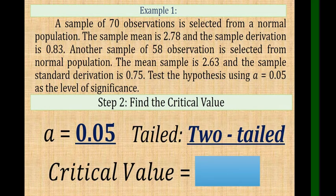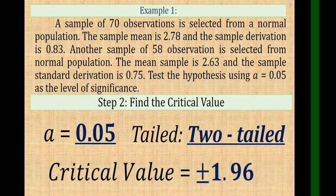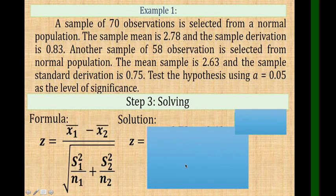Looking back to the critical region, if we put two-tailed and 0.05 and get their intersection in the critical region, you will get positive-negative 1.96. This is now our critical value as our comparison later for our computed value, whether to accept or reject the HO.